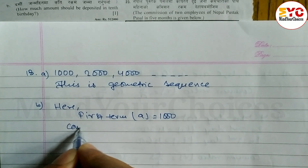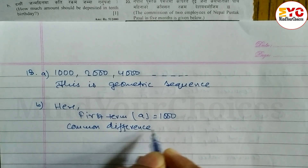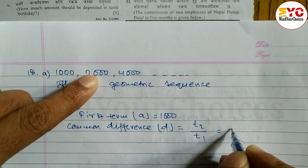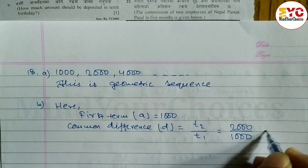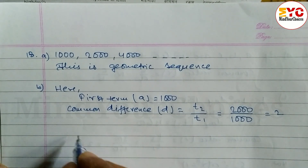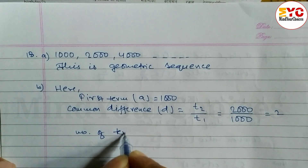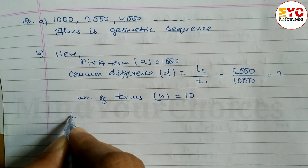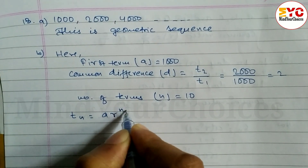Now find the common ratio. The common ratio R is equal to T2 divided by T1. T2 value is 2,000, T1 value is 1,000 — when you divide, we get 2. So the number of terms n is equal to 10. The formula for T10 is a times r to the power n minus 1.